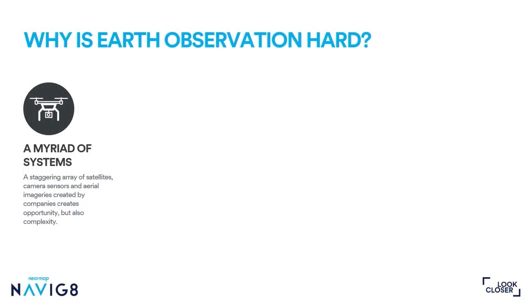Now we know what it is, let's think about what makes it really hard. First is the technology. There is some wonderful technology out there, constantly rolling out new camera systems, new satellites, things like synthetic aperture radar. But every time a new tech comes out, it starts with a fresh history rather than going back in time. So if you're trying to understand how the world has changed, this creates big challenges with this constantly evolving set of technologies.